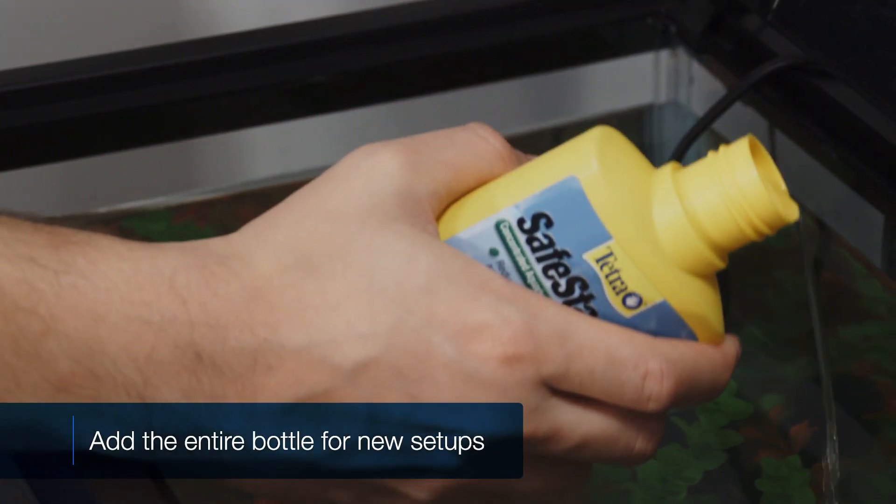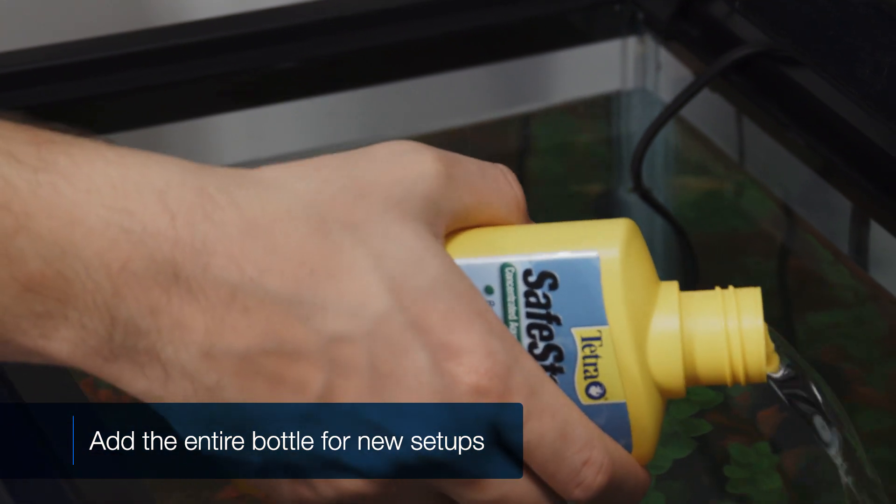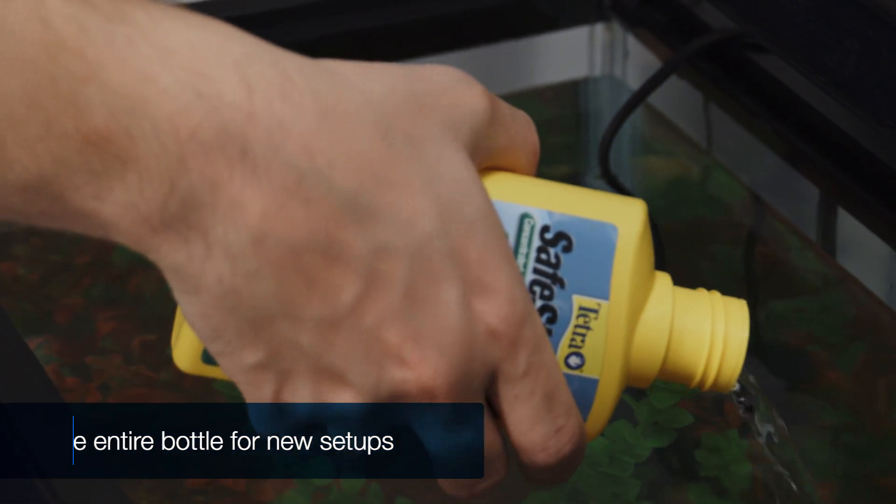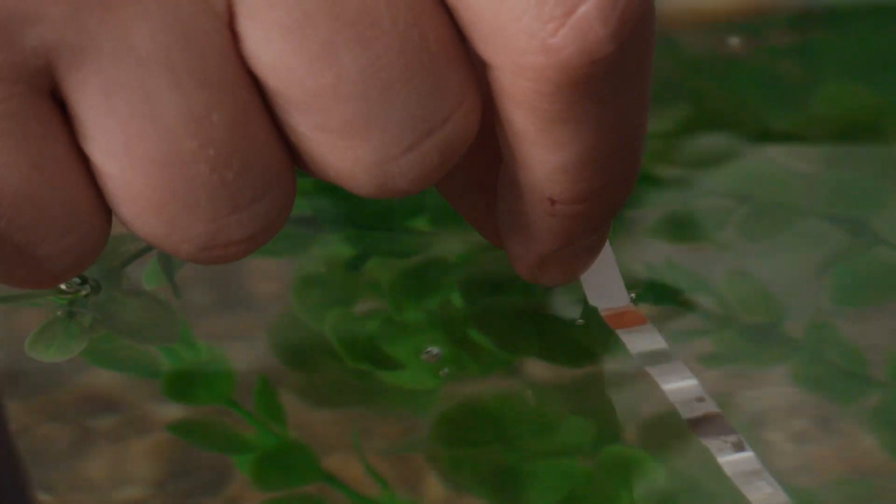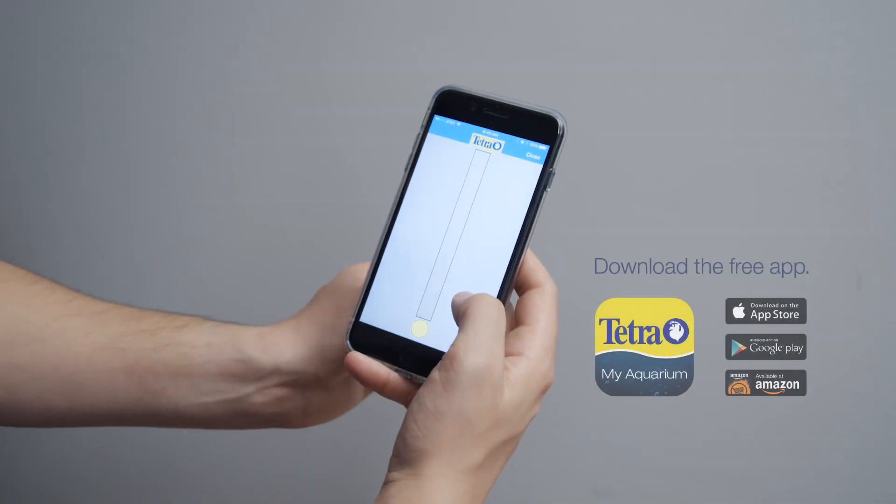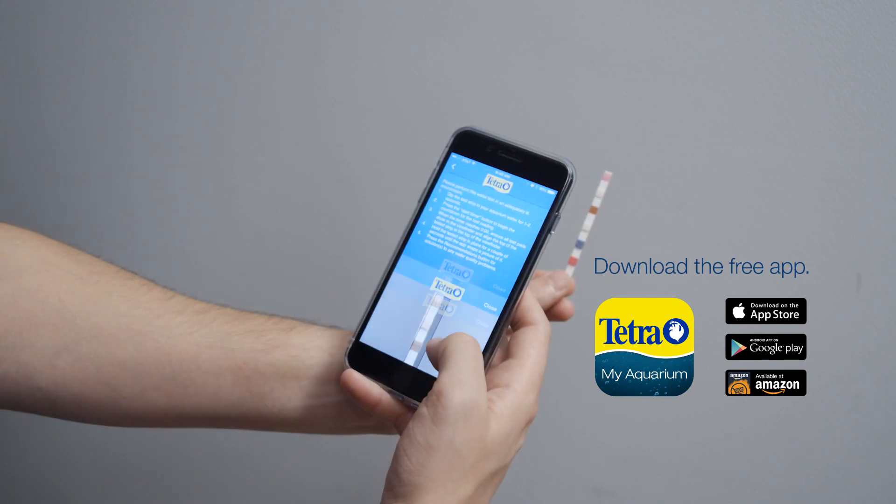In the meantime, dose your tank with Tetra Safe Start to quickly cycle it with live bacteria. We also recommend testing your water quality with Tetra Easy Strips and the MyAquarium app, which you can download free.